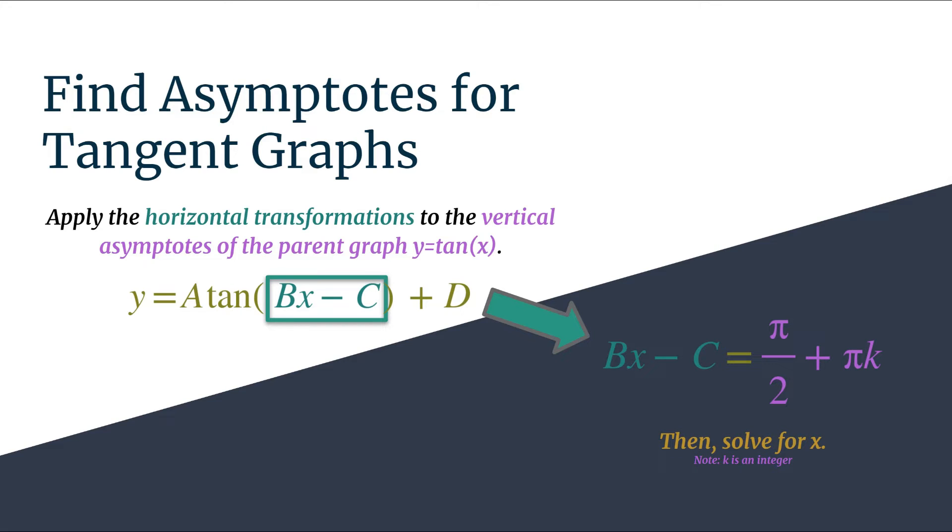Do note that k is an integer, so we will get an equation that generates all the asymptotes for our tangent graph. And we should know that tangent graphs are periodic, which means they simply repeat over and over again, and that means we have infinitely many vertical asymptotes. So all you have to do to find those is substitute in different integers for k.